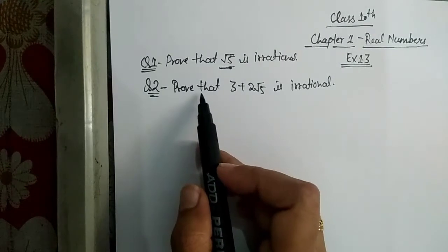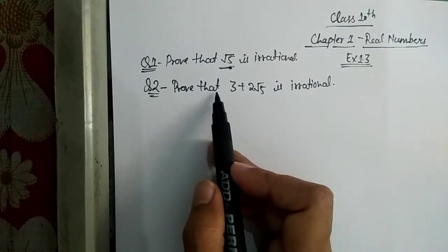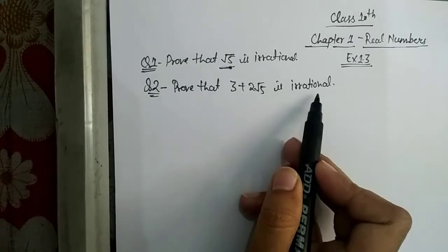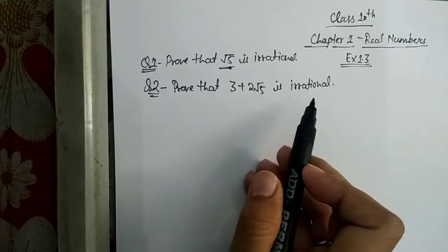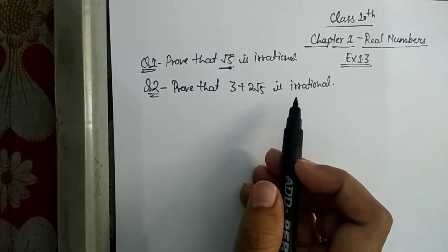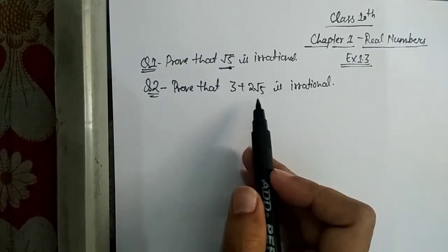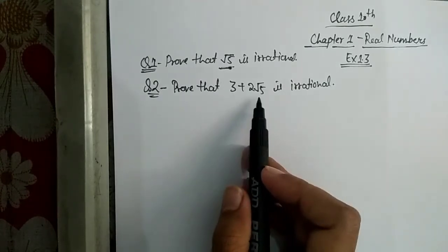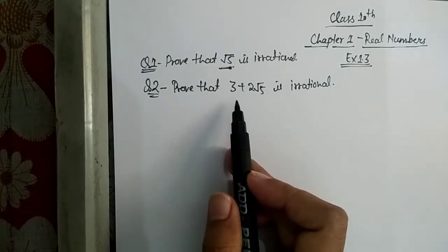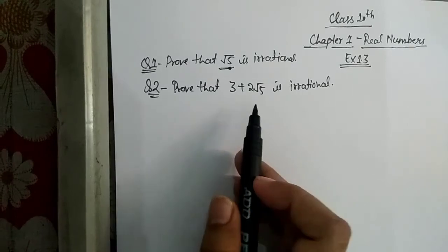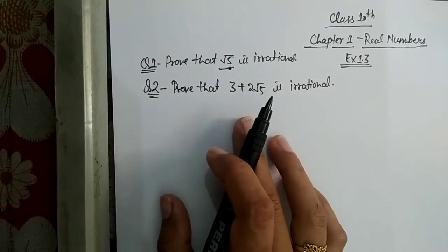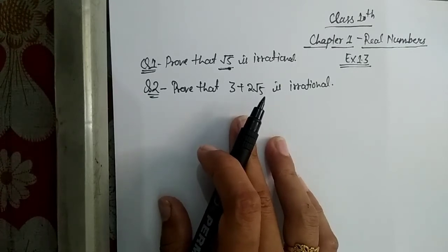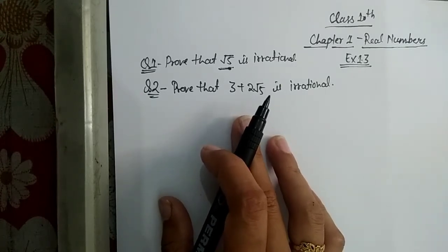Now we will see the second question. In this question, we have to prove that 3 + 2√5 is irrational. These types of questions I have told you yesterday also, so I will tell you this question in a short way. For a detailed description, you can see my previous video.